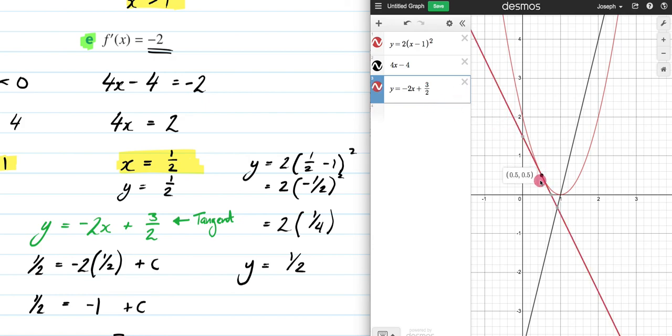And as you can see here, the point at which that intersects is (1/2, 1/2), which is exactly what we found here. So this is the tangent to f(x) when my gradient is -2.